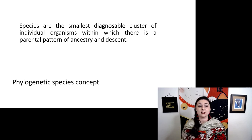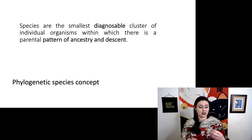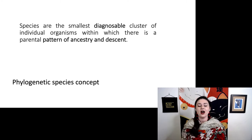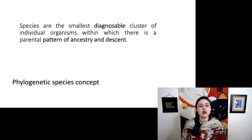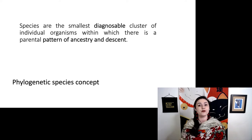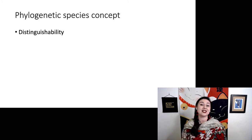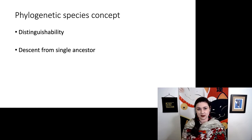The phylogenetic species concept emphasizes different things. Now we're looking at diagnosable traits — specific phenotypes that we can observe — and specifically noting that there's a pattern of ancestry and descent. This recognizes that species are a lineage stretching over a period of time. The phylogenetic species concept emphasizes that you can distinguish different species from each other and that they descend from a single ancestor.